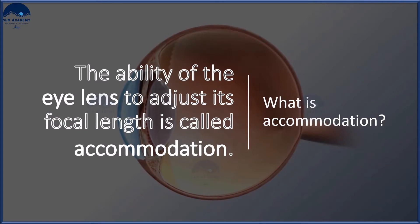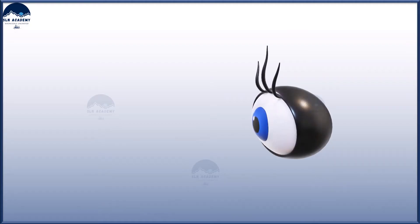The ability of the eye lens to adjust its focal length is called accommodation. However, the focal length of the eye lens cannot be decreased below a certain minimum limit.